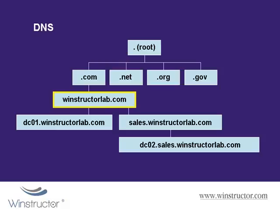To operate your own domain, such as windstructorlab.com, you would have to pay for a domain name from a domain registrar. You'd do this by going to any registrar's website, providing some information about yourself and giving them your credit card details. In return, they'll set aside that domain name and grant you the rights to operate the domain that you paid for. We don't really own the domain — we'll be leasing it, much like renting a house or a car. You can use it for as long as you like, as long as you continue to pay the rent.